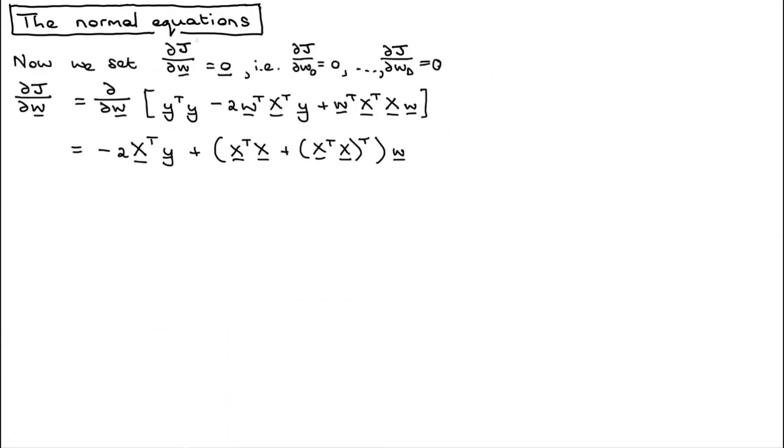Now what we're going to do is take the derivative of the loss with respect to the vector w and then set it equal to zero, which is the same as setting each of the individual elements equal to zero.